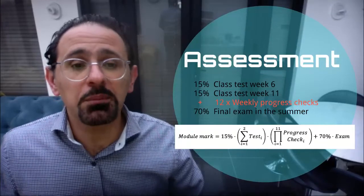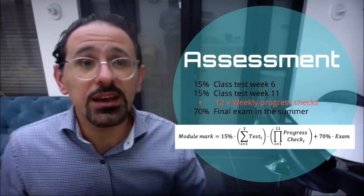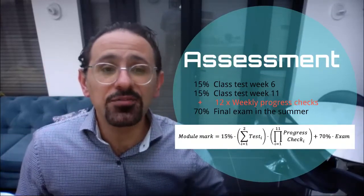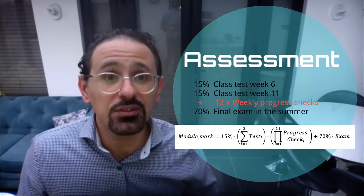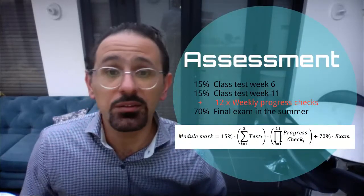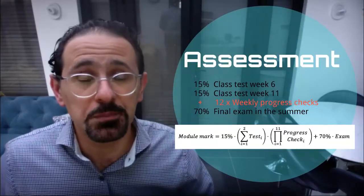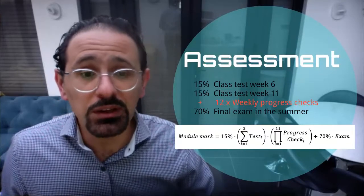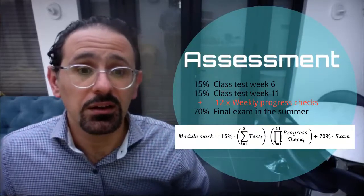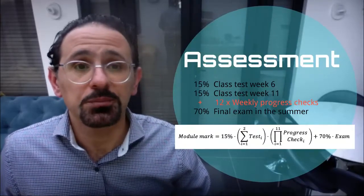But because the way I've set up the assessment, you have to get a hundred percent in every single progress check. So every week you have to score a hundred percent. There's no possibility of scoring zero. If you score zero, you fail the module, or at least you fail the class work component of the module.